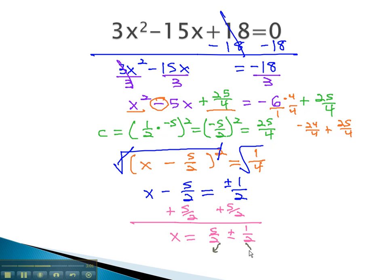Considering our two answers, x is equal to 5 plus 1, or 6 halves, which reduces to 3, or 5 minus 1, 4 halves, which reduces to 2. Our solutions are 3 and 2.